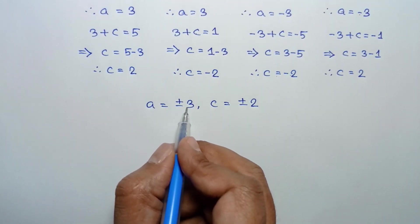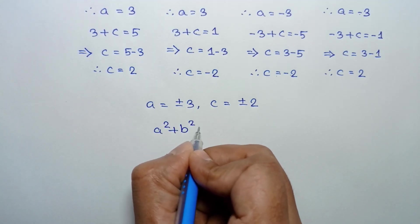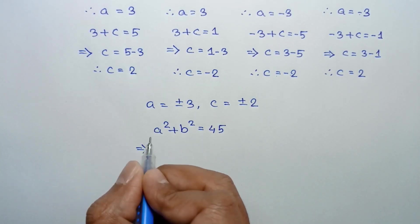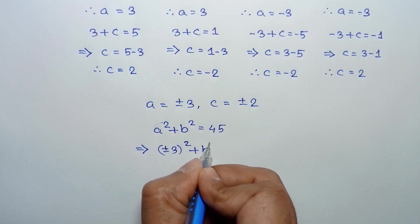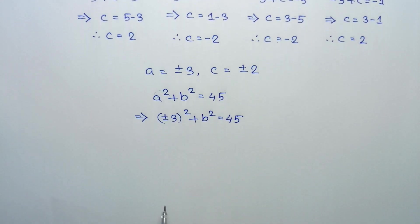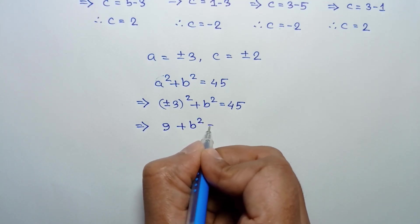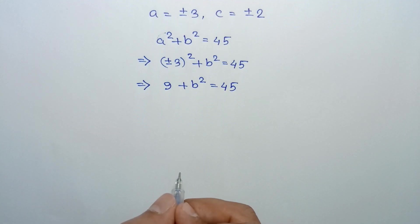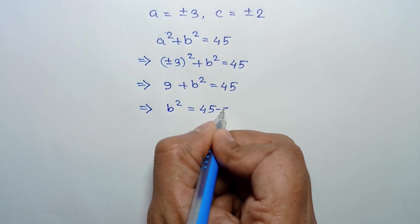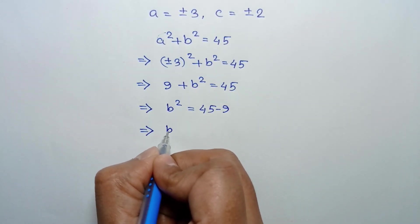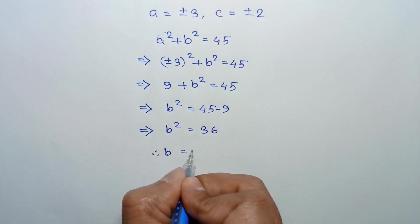Now substituting a equals plus or minus 3 into equation number one: a squared plus b squared equals 45. Substituting gives plus or minus 3 whole squared plus b squared equals 45, or 9 plus b squared equals 45. Taking 9 to the right side: b squared equals 45 minus 9, which is 36. Taking the square root of both sides gives b equals plus or minus 6.